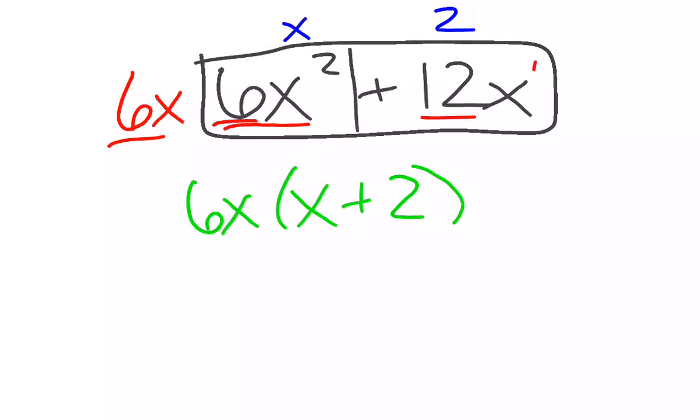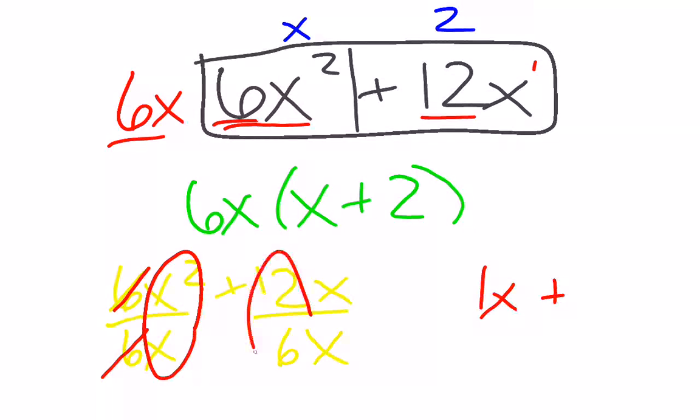And once again, what we're really doing is division. So we're really saying 6x squared plus 12x, and we're dividing both of those by 6x. So 6 over 6 cancels and gives me 1. x squared over x gives me 1x plus 12 over 6 is 2. x over x cancels, and then I put my GCF out front.